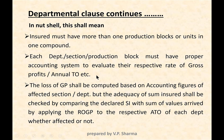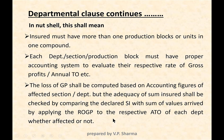The loss of gross profit shall be computed based on the accounting figures of the affected section only — not on the overall figures of the industry. However, the adequacy of sum insured shall be checked by comparing the declared sum insured with the sum of values arrived at by multiplying the rate of gross profit by the respective turnover of each department, whether affected or not.